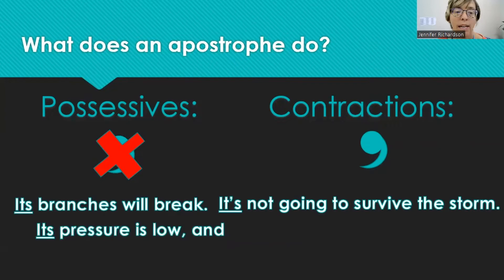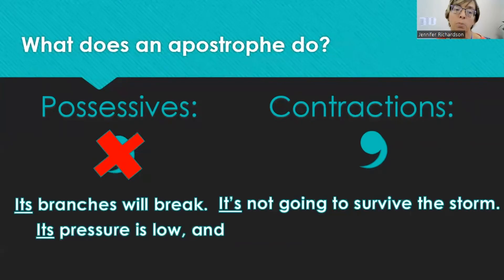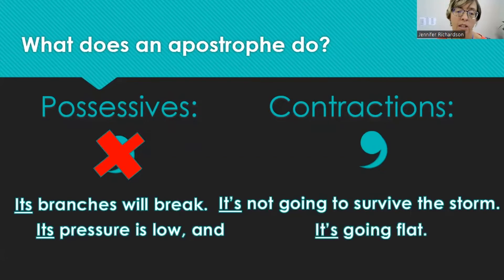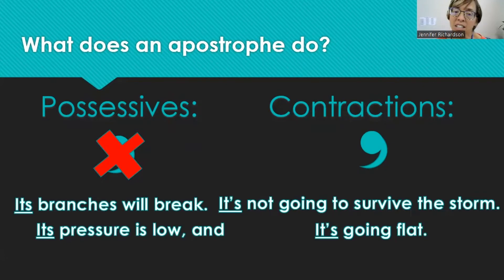Here's another example: its pressure is low. Its is a possessive pronoun — no apostrophe. And it's going flat means it is going flat. It is is contracted, and that apostrophe must be there to hold the place of the missing I.